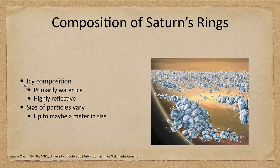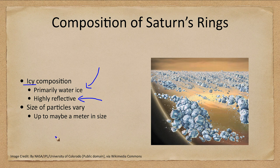So what are Saturn's rings made of? They're primarily icy — primarily water ice — and highly reflective. The particle sizes vary; you can have very tiny particles and things up to maybe a meter or so in size — roughly as large as a human. They can clump together. This is not a photo of Saturn's rings but an artist's conception of what you might see based on our understanding of what the rings are like.